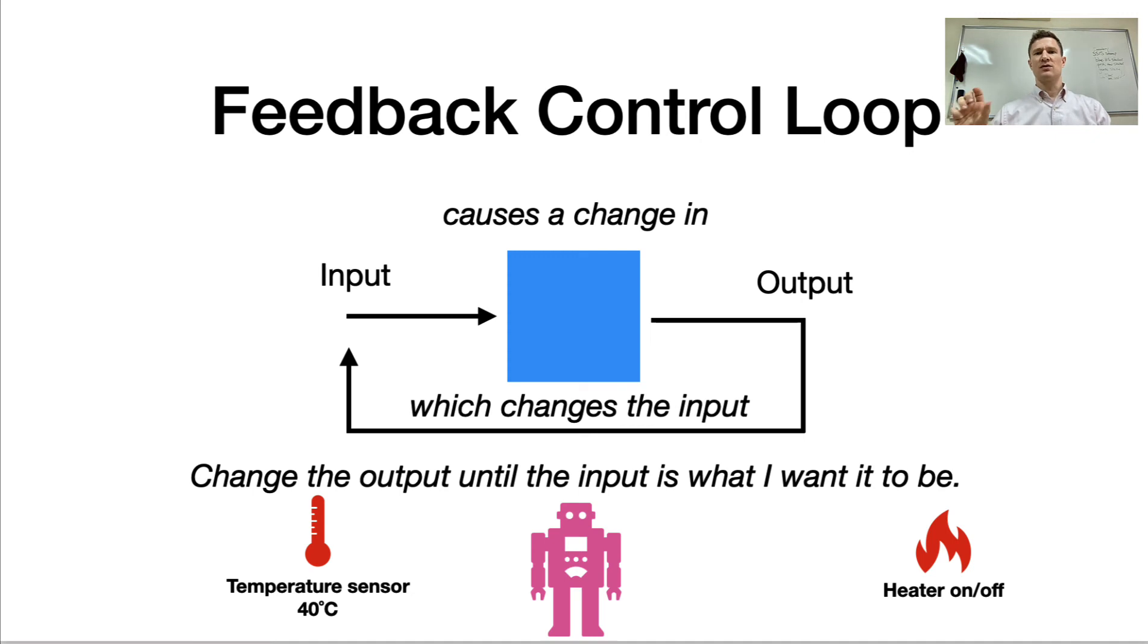This is the reverse of what we did first semester. First semester, we talked about for a given input, what do we want the outputs to be? But in a control loop, we are using the outputs to make the input to our system what we want it to be. So we're using the heater to change the temperature in the room.